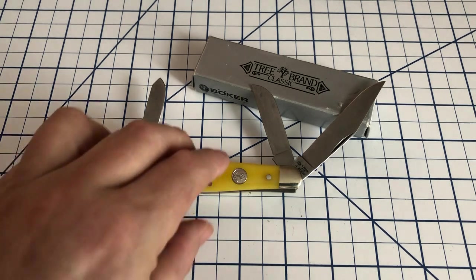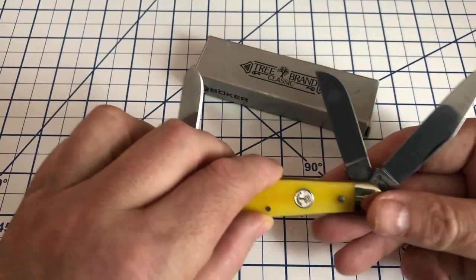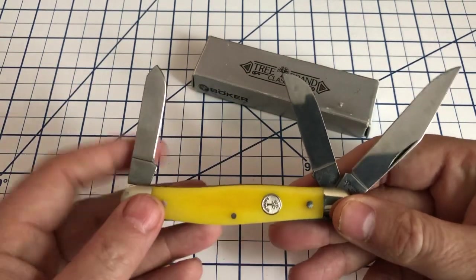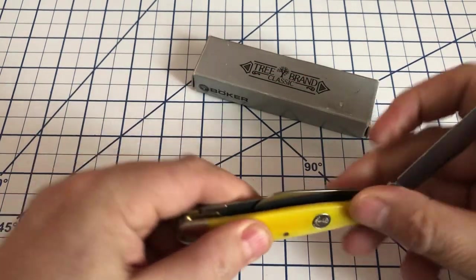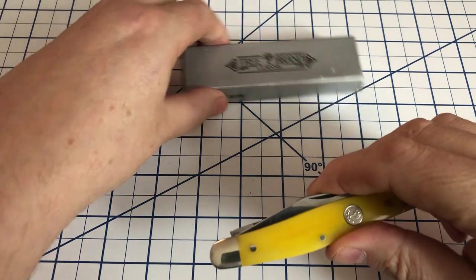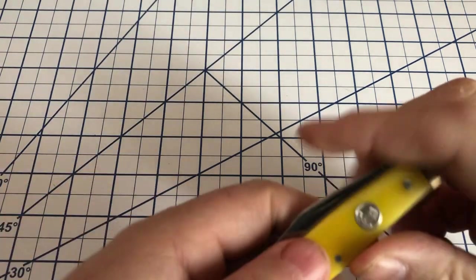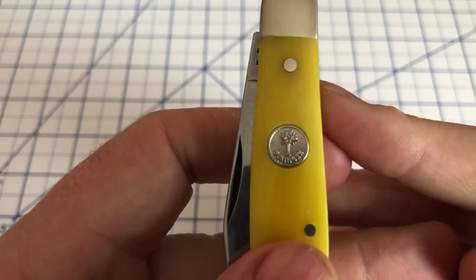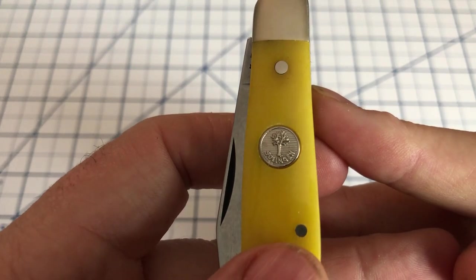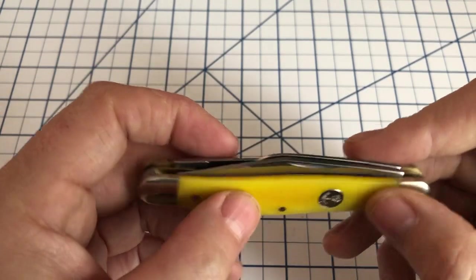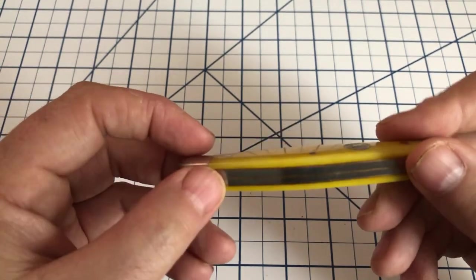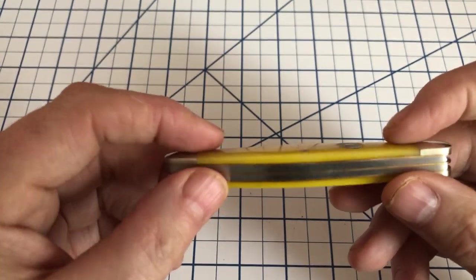This is the 7474YB. This is a knife from Solingen. You can see you have the actual Solingen shield on here. This is in yellow smooth bone and this is just a lovely little knife.